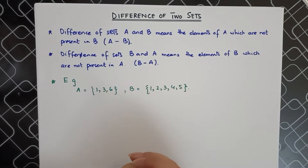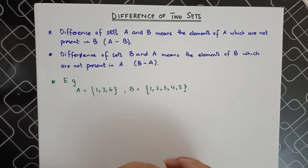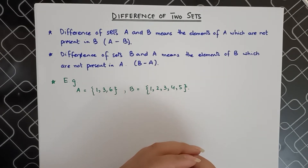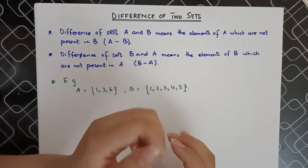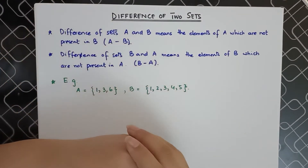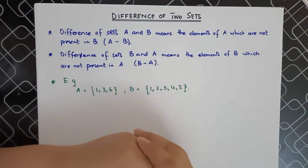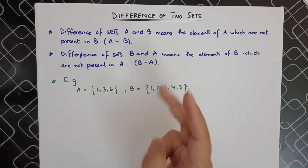Hello students, today we're going to discuss the difference of two sets. We have already covered union and intersection of sets, and now we're going to talk about the third operation: difference of two sets. Difference means that whatever we take out from the first group, the remaining left is known as the difference. In case of sets, it means the same thing — if we are taking a difference between two sets A and B.